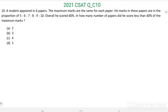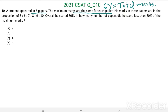So the student appeared in 6 papers and the maximum marks are the same for each paper. If y is the maximum marks in each paper, then total marks equal to 6y. His marks are in the proportion of 5:6:7:8:9:10. Overall he scored 60% of the total marks. In how many papers did he score less than 60% of the maximum marks?